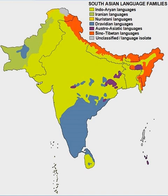Older examples of the Brahmi script appear to be on fragments of pottery from the trading town of Anuradhapura in Sri Lanka, dated to the early 5th century BCE. A minority position holds that Brahmi was a purely indigenous development, perhaps with the Indus script as its predecessor, supported by English scholars G. R. Hunter and F. Raymond Allchin.